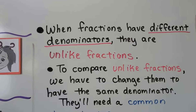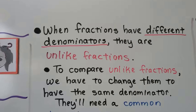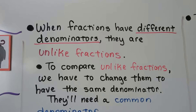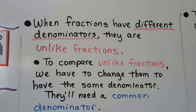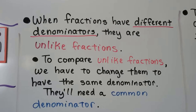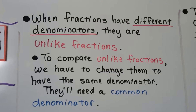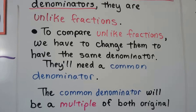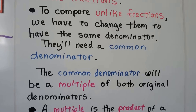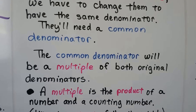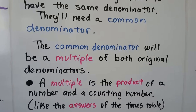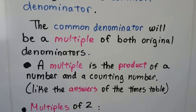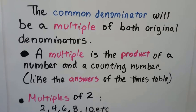When fractions have different denominators, they're unlike fractions. To compare unlike fractions, we have to change them to have the same denominator — they'll need a common denominator, and that common denominator will be a multiple of both original denominators. A multiple is the product of a number and a counting number — it's like the answers of the times table.